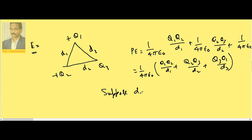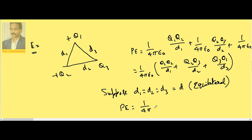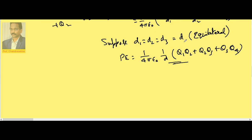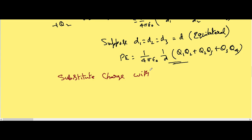If D1 = D2 = D3 = D, meaning it is an equilateral triangle, then the potential energy becomes (1/4πε₀) × (1/D) × (Q1·Q2 + Q2·Q3 + Q3·Q1). Important point: substitute each charge along with its sign — if it is positive, substitute plus; if it is negative, substitute minus. Only then will you get the correct answer.